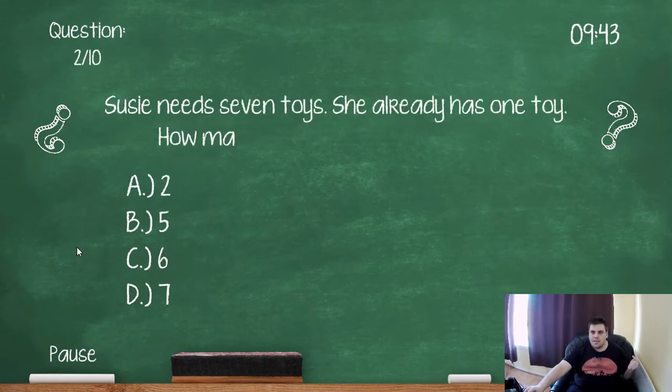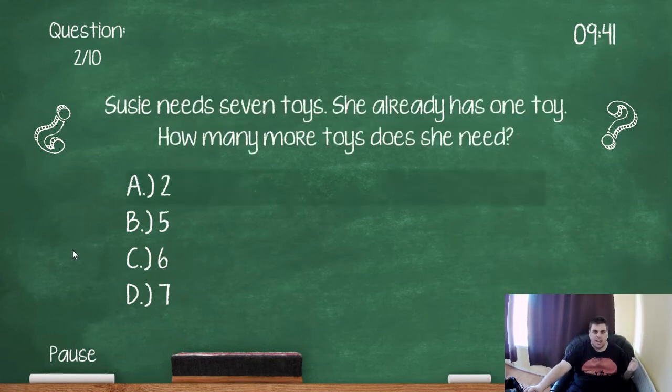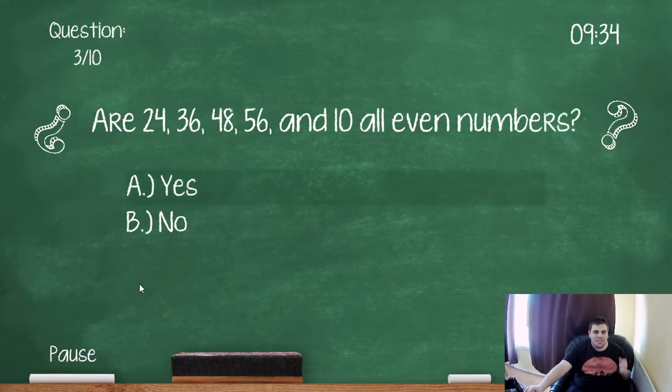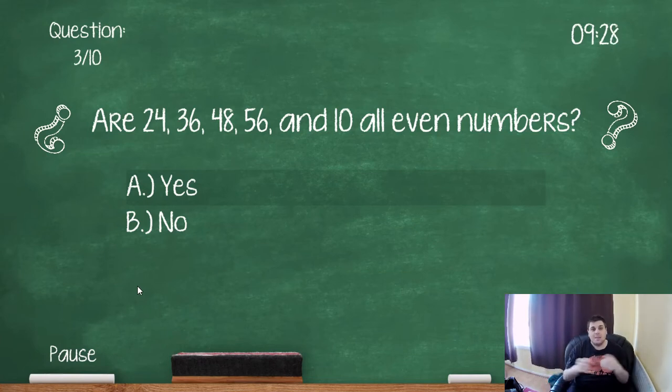Susie needs seven toys. She already has one toy. How many more toys does she need? Okay seven take away one, six. Are 24, 36, 48, 56 and 10 all even numbers? Yeah so even numbers just means they can be divided equally into two groups without going into decimals or numbers smaller than one. So 24 is even because it's 12 and 12.